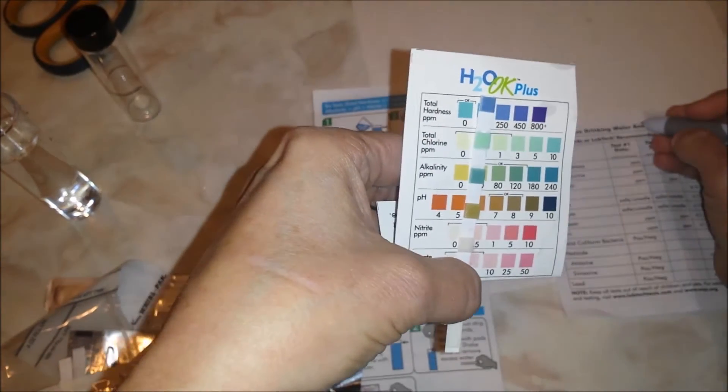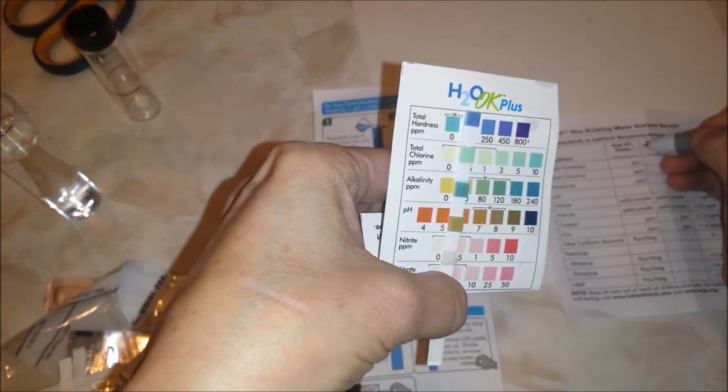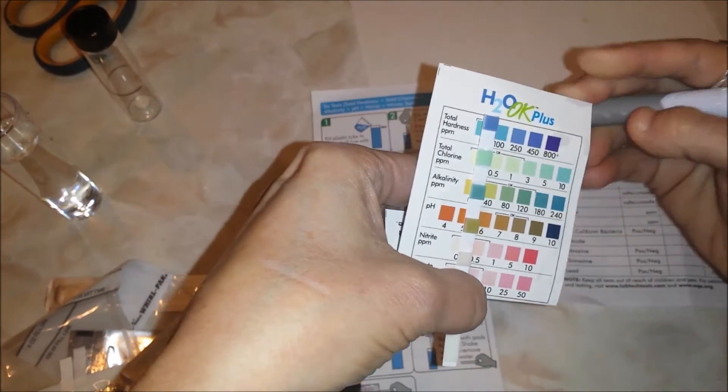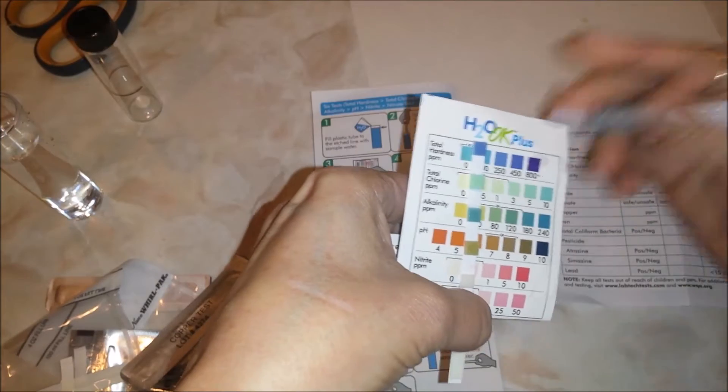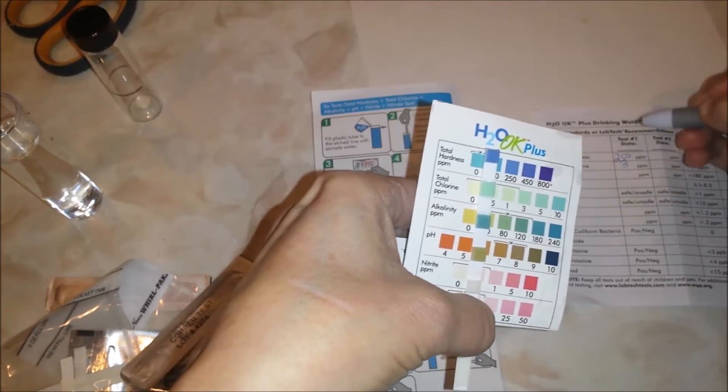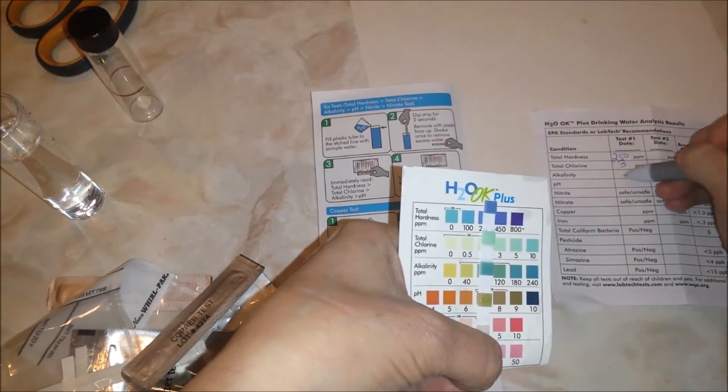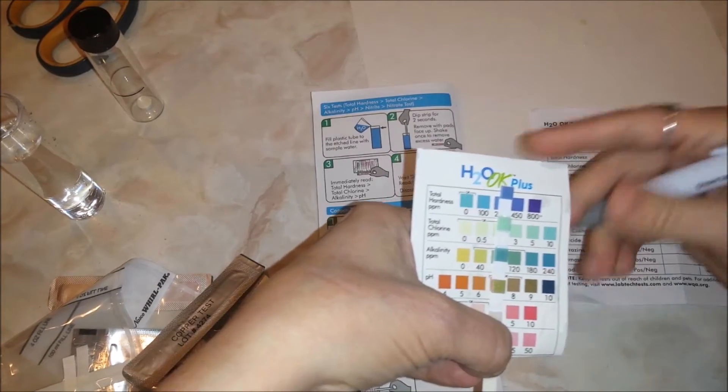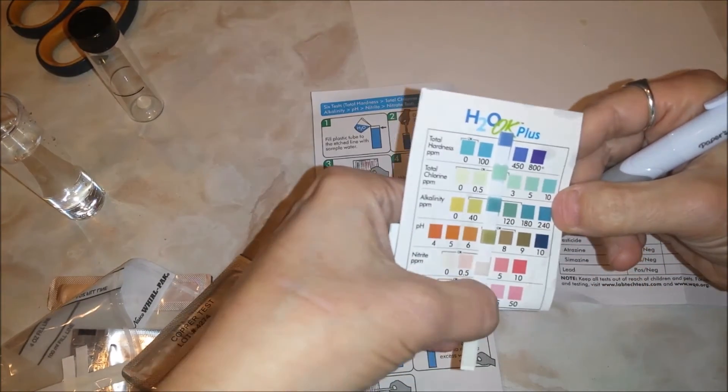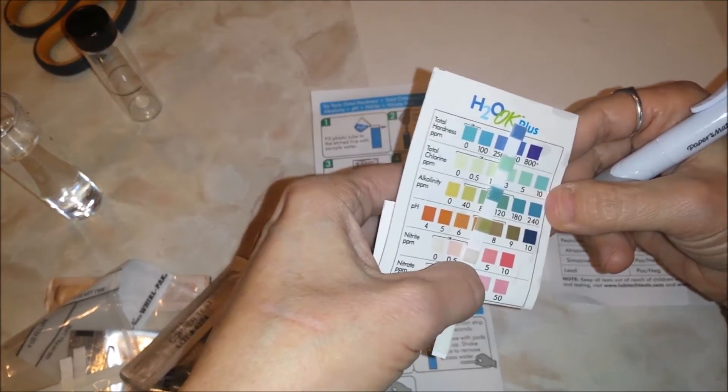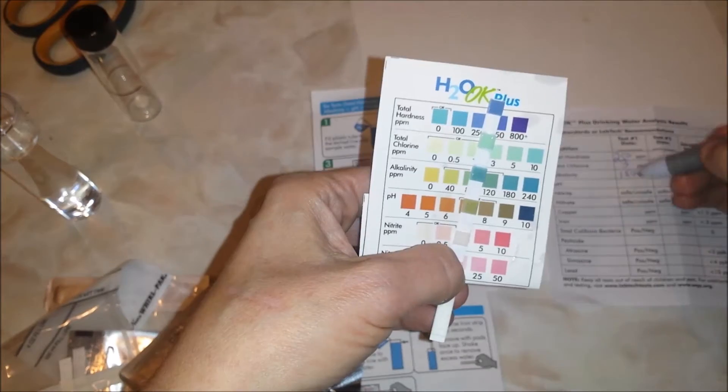I'm going to say my hardness is a 250. My chlorine is a 3. My alkalinity most closely matches the 180. My pH most closely matches - it's in between an 8 and a 9, so I'm going to say an 8.